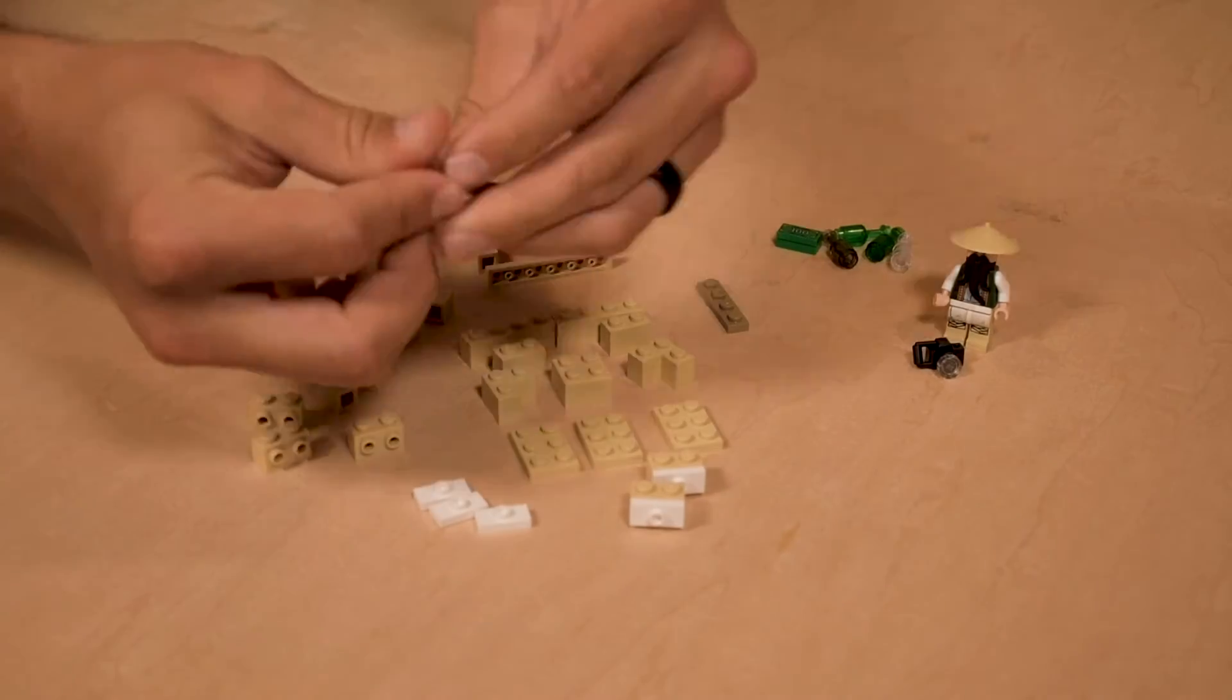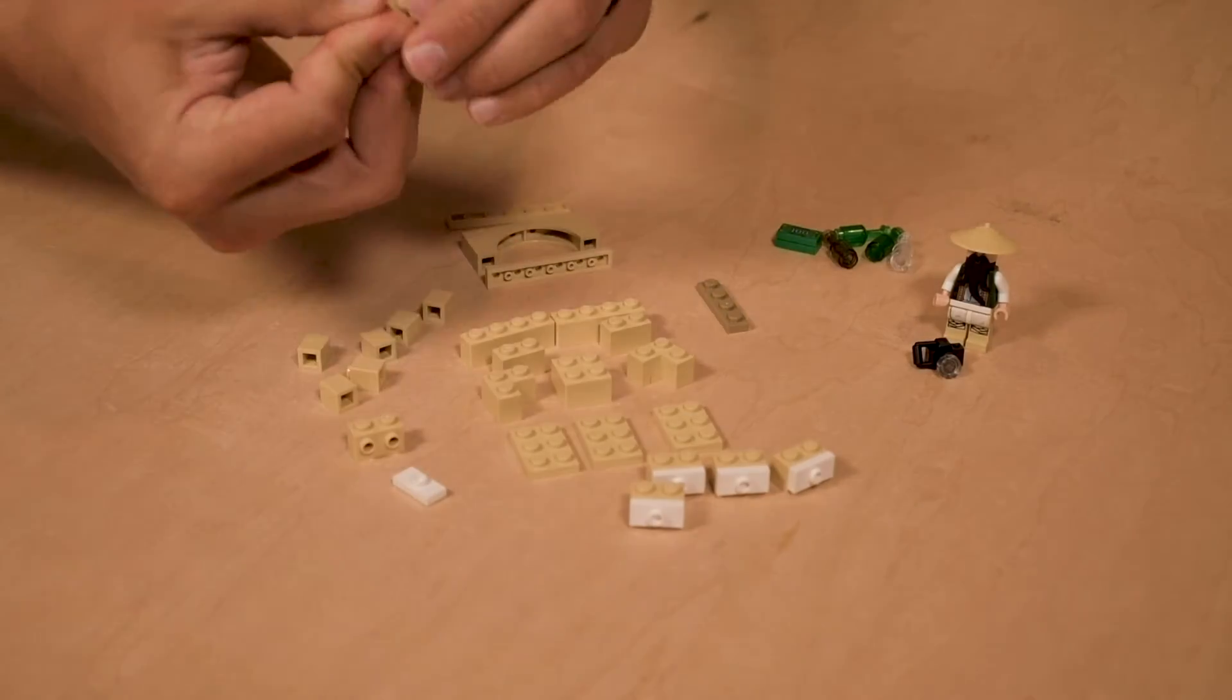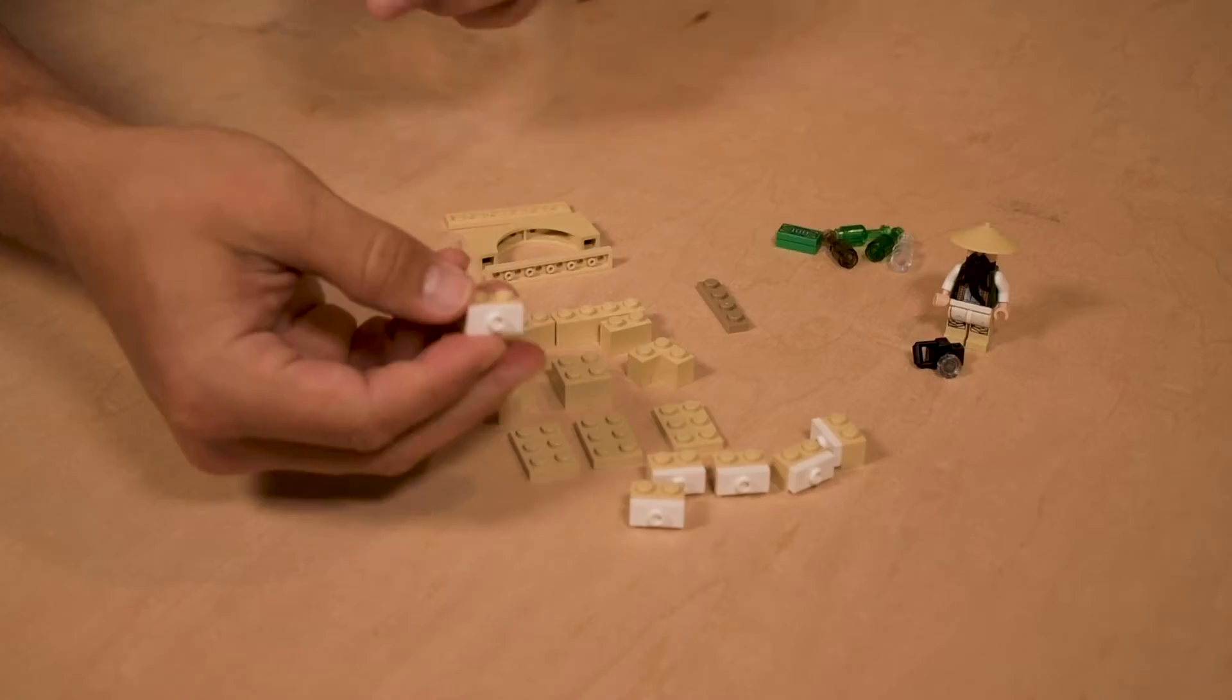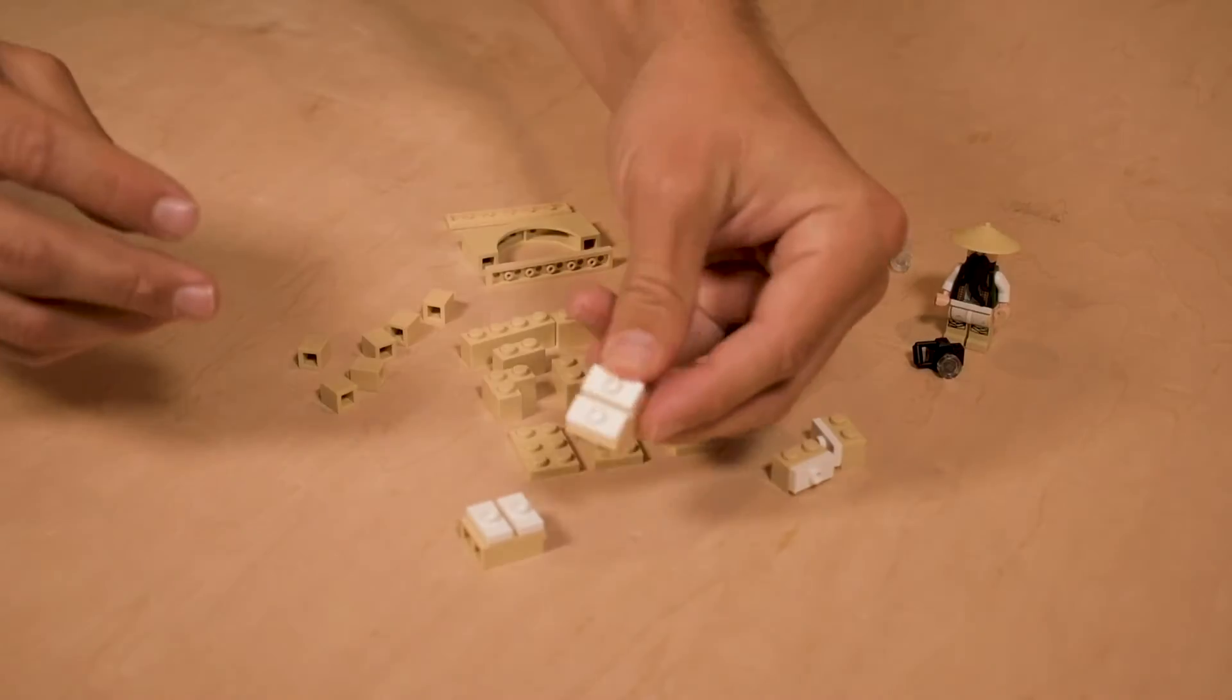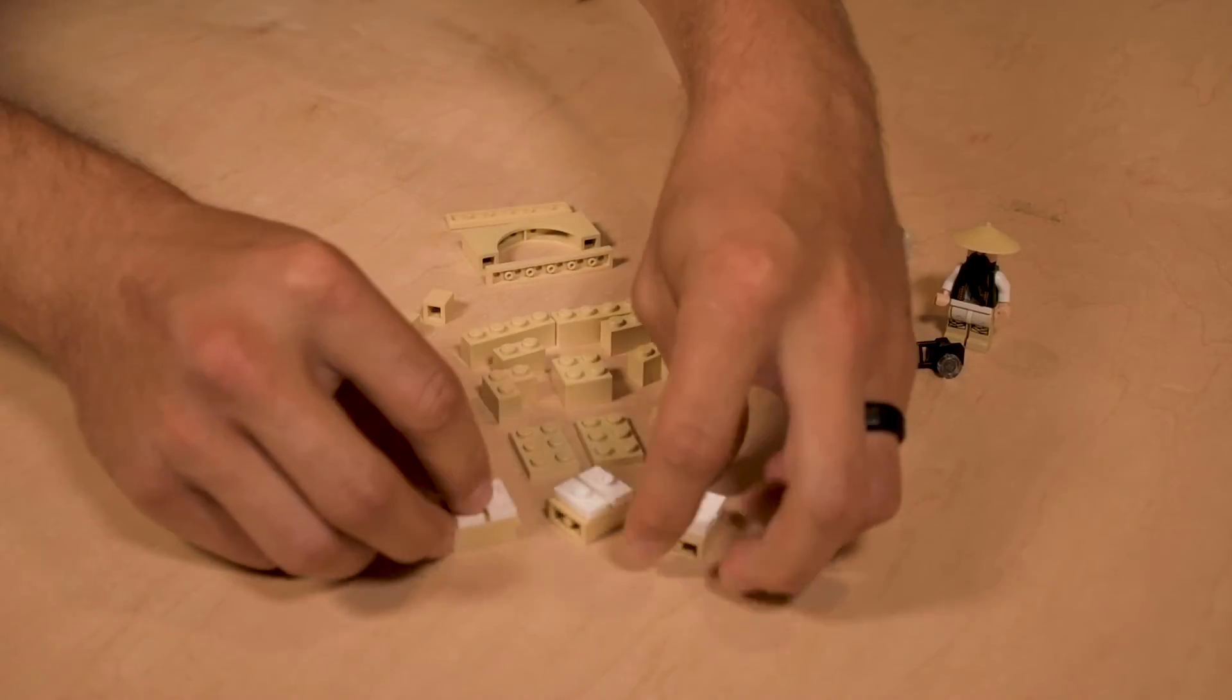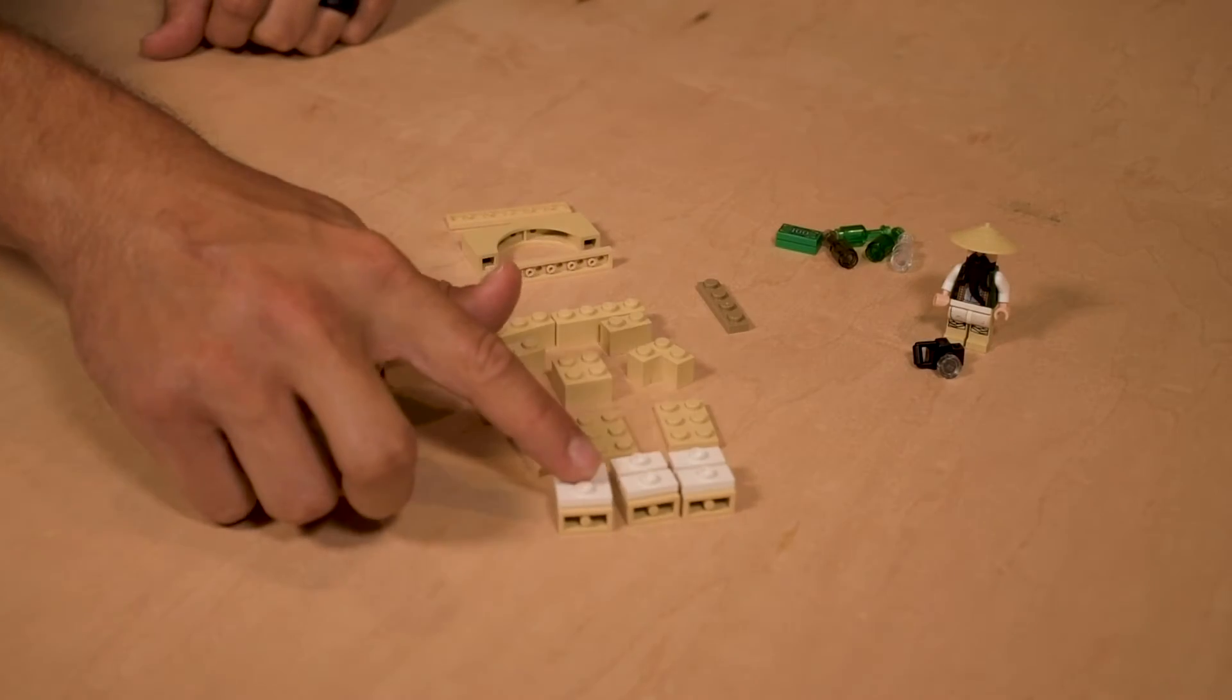So we're going to do that really quick and now we have the beginnings of some cabinets. Now I'm going to take these and stack them two high, so one and two, one and two, one and two. This is going to be the forward facing element of the cabinet or the hutch.